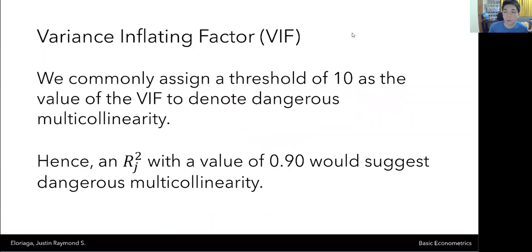What we do is we commonly assign, based on the literature, a threshold value of 10 as the value of the VIF to denote dangerous multicollinearity. And because of that threshold, a value of an R squared sub J equal to 0.9 would suggest dangerous multicollinearity.